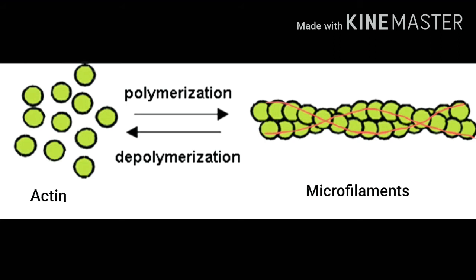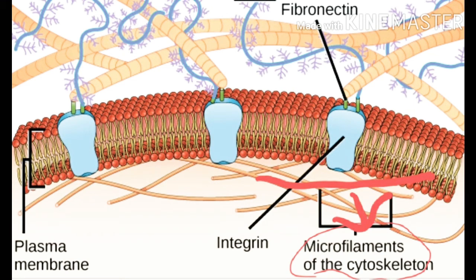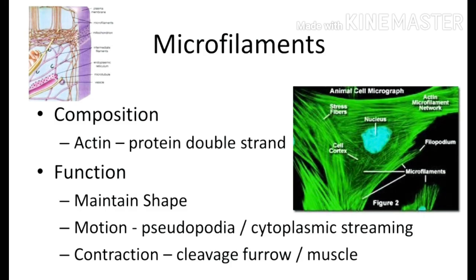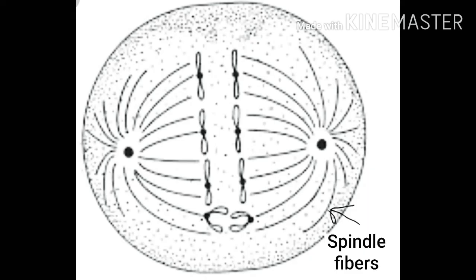These microfilaments are generally present below the plasma membrane, but they can also be connected with endoplasmic reticulum and chloroplast — they can be associated with these organelles as well. These microfilaments are also connected with spindle fibers. Spindle fibers are the structures which are formed during cell division and they play a very important role in cell division.